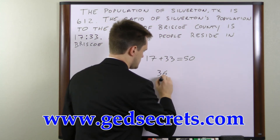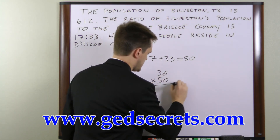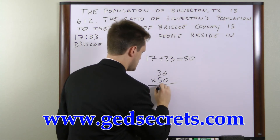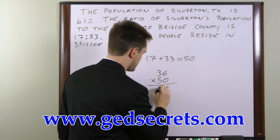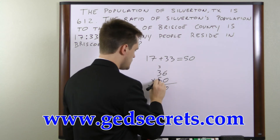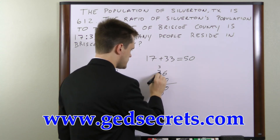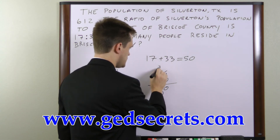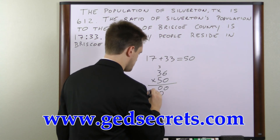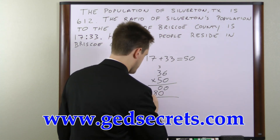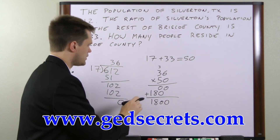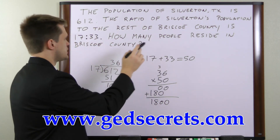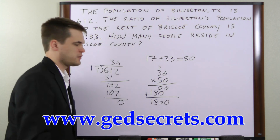5 times 6 is 30, so we have a 0 and carry a 3. 5 times 3 is 15, plus 3 is 18. So we get 1,800 people. In Briscoe County, there are 1,800 residents.